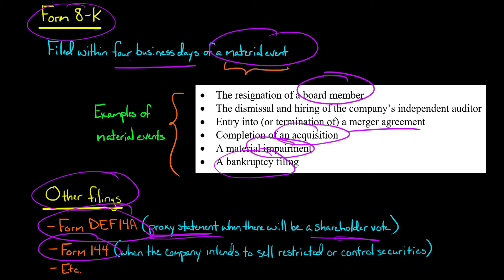Also Form 144, if the company's intending to sell restricted securities or control securities, for example if the company is going to be selling some security specifically to its executives, they'll file Form 144. And again, this is just a partial list. There are many other different filings in different situations that you would see that a public company would have to file with the Securities and Exchange Commission.